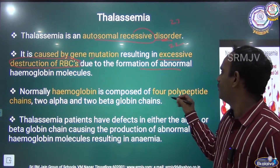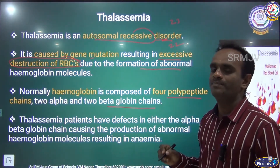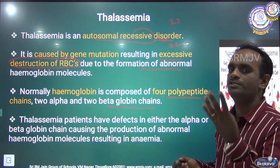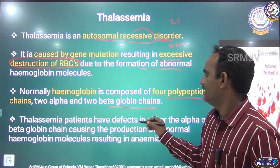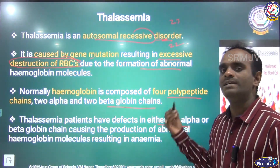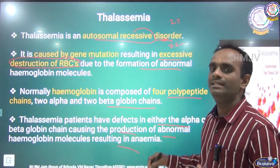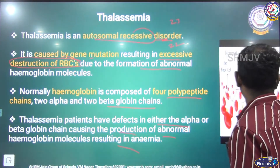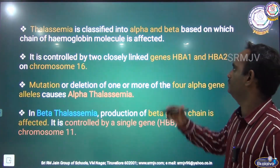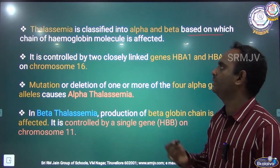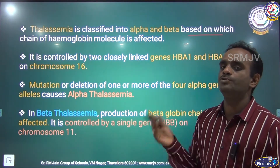Normally, hemoglobin is composed of 4 polypeptide chains: 2 alpha chains and 2 beta globulin chains. Thalassemia patients have a defect in either the alpha chain or beta globulin, causing the production of abnormal hemoglobin molecules resulting in anemia. Thalassemia is classified into alpha and beta based on which chain of the hemoglobin molecule is affected.